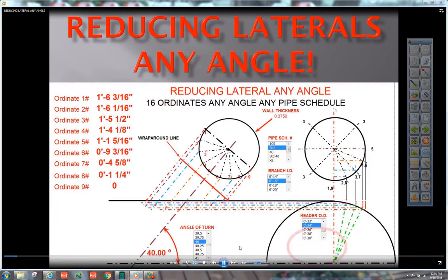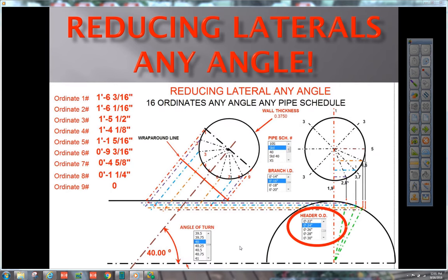Let's review our problem. We have a 24 inch header, a 16 inch branch with a 375 wall thickness, standard wall. Angle of turn is going to be 40 degrees.